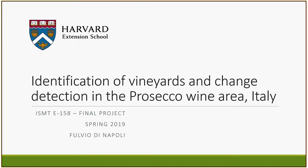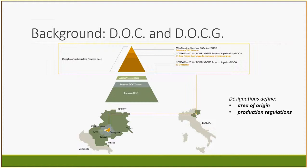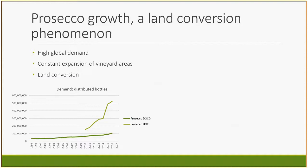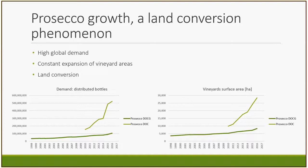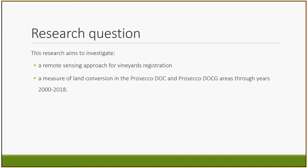The subject for my research project in this course in remote sensing is identification of vineyards and change detection in the Prosecco wine area. Prosecco is produced in the northeast of Italy between Veneto and Friuli Venezia Giulia. There are several types of wine quality designations. A designation certifies the area of origin and the production regulations of the wine. The highest level in Italy is the DOCG, followed by the DOC.